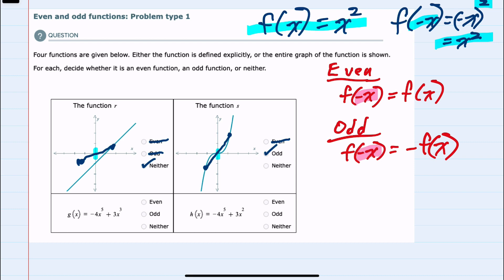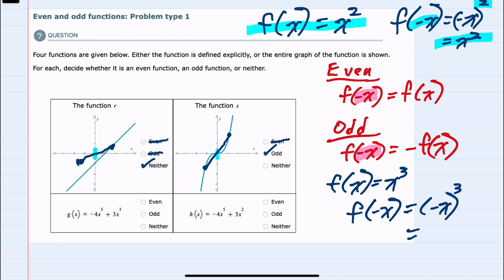And then for odd functions, when you do that substitution, replacing x with negative x, you would get the opposite sign for f(x). So here I'll give the example of f(x) equals x³. If we replace x with negative x, cubing a negative x would simplify to just negative x³.